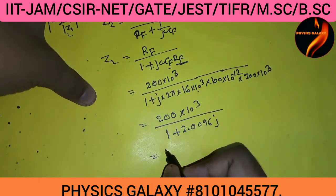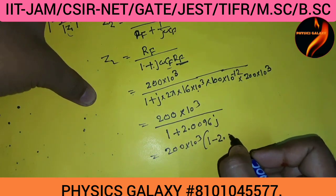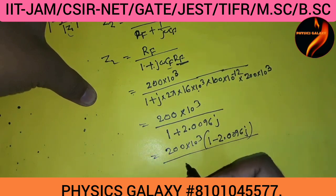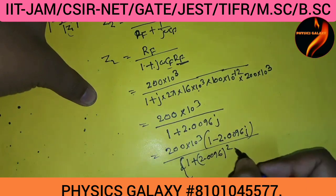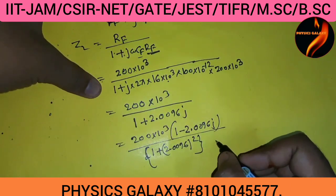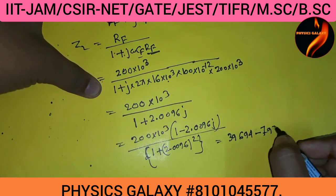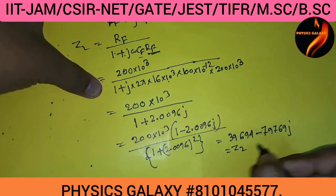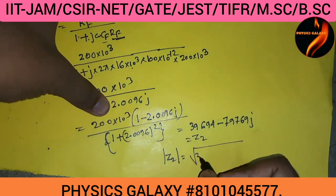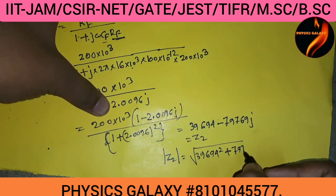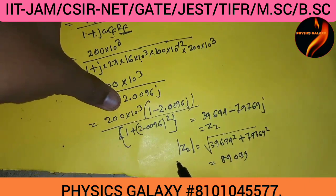Rationalizing the expression, Z2 becomes 200×10³ multiplied by (1 minus j·2.0096) divided by (1 plus 2.0096²). This simplifies to 39694 minus 79769j. Therefore, the magnitude of Z2 is √(39694² + 79769²), which gives |Z2| = 89099.